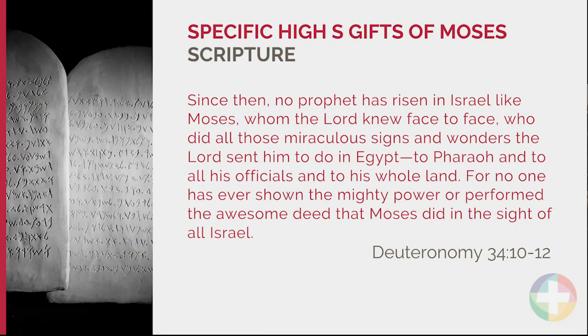This passage is God's own impression of Moses — his assessment of Moses' leadership. This is from Deuteronomy, the end of Moses' life — kind of his epitaph based on what God thought. 'Since then, no prophet has risen in Israel like Moses, whom the Lord knew face to face, who did all those miraculous signs and wonders the Lord sent him to do in Egypt, to Pharaoh, and to all his officials and to his whole land. For no one has ever shown the mighty power or performed the awesome deeds that Moses did in the sight of all Israel.' That's a pretty good epitaph.